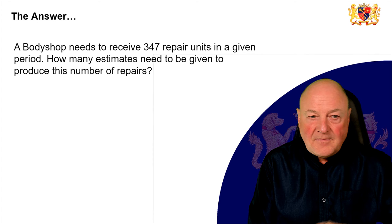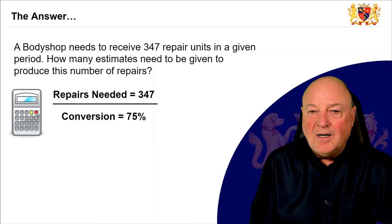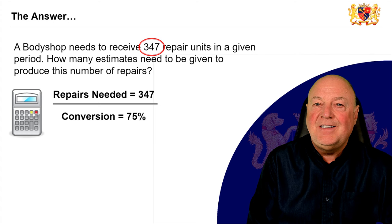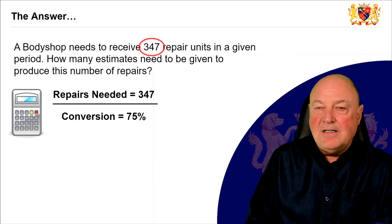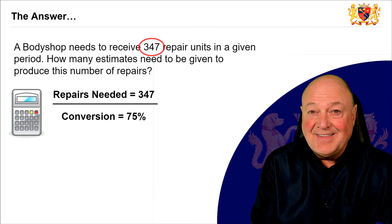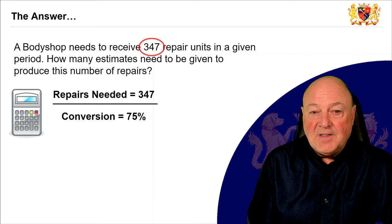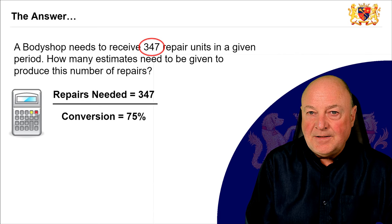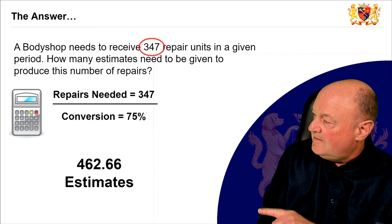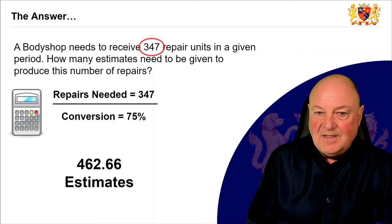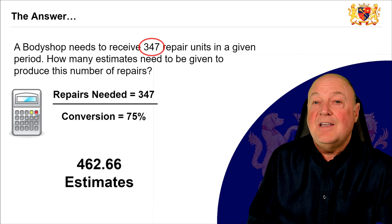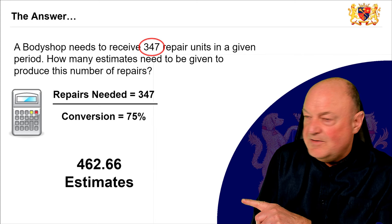A body shop needs 347 units, and we should be converting 75% of the estimates done. So how many estimates do you need to do to be left with 347 jobs? Get your calculator out: 347 divided by 75% gives you 462.66. That's the number of estimates you need to do to reach 347 jobs at a 75% closing ratio — so rounding up, that's 463.